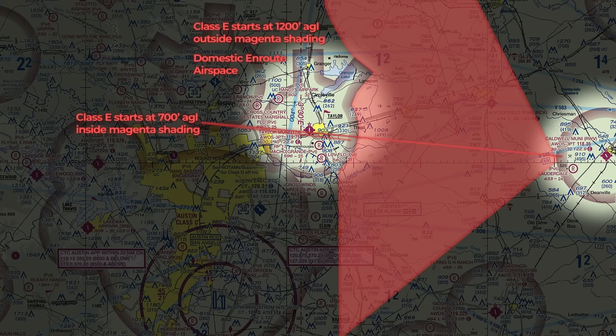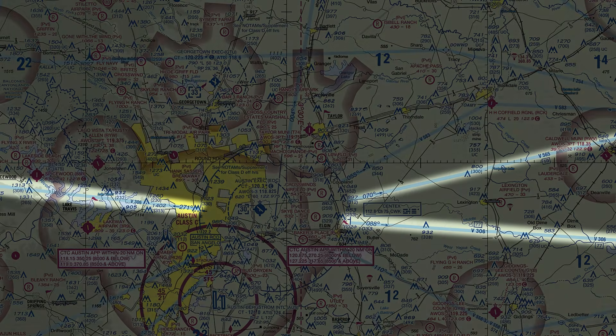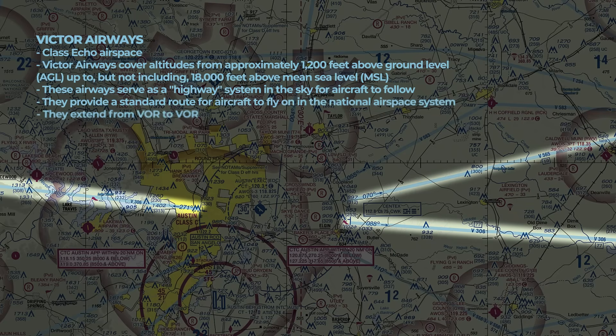Low Altitude Federal Airways, or what we like to call Victor Airways, are depicted as blue shaded lines on the VFR sectional and are also Class Echo airspace. They extend up from 1,200 feet AGL all the way up to but not including 18,000 feet MSL. Think of Victor Airways like highways in the sky — they extend from VOR to VOR and pilots can use them to easily follow along, just like you would on a highway on a road trip across the country.